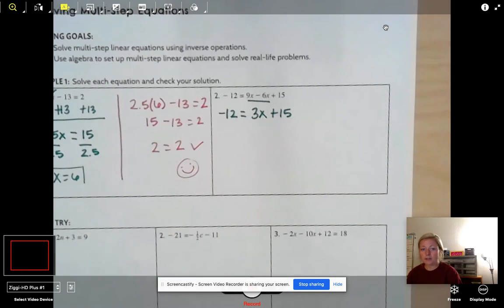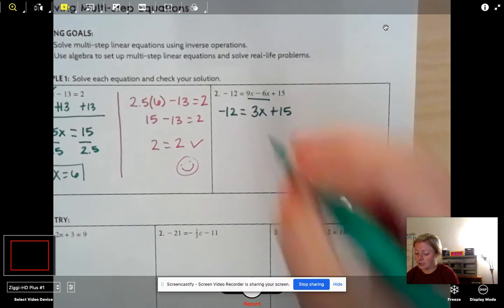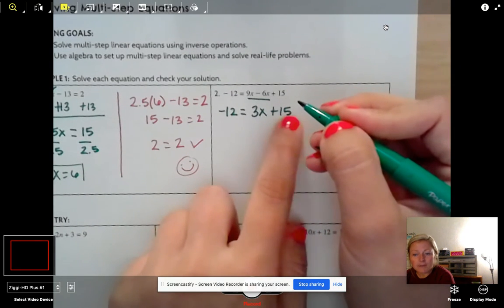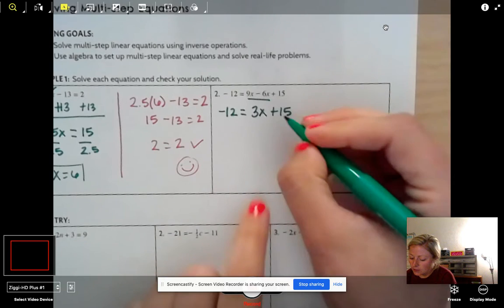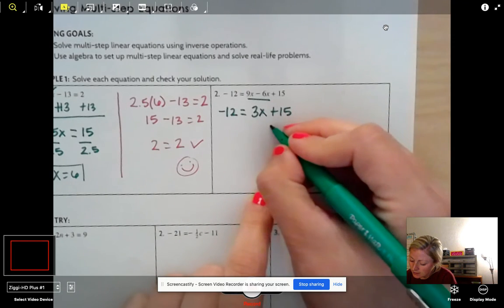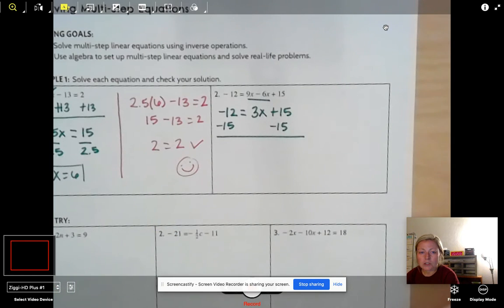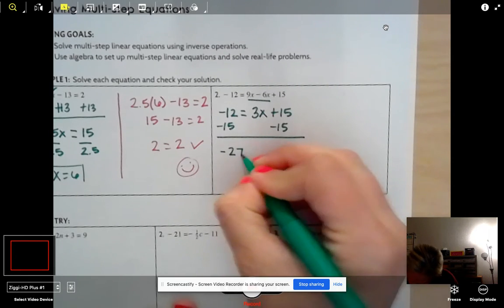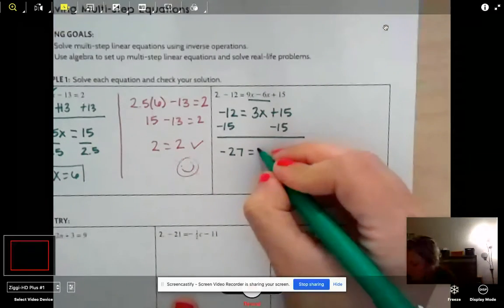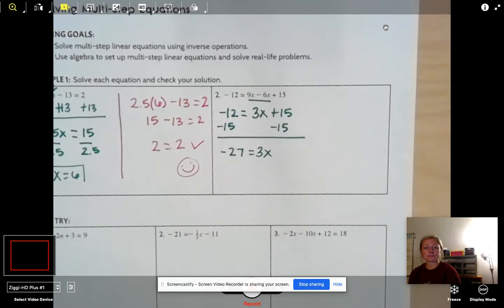And now you can drop down your 15. So we combined those two like terms. And now from here, we just get our variable alone. So I first have to get rid of that 15. So what's the opposite of adding 15? We subtract 15. We subtract 15. So negative 12 minus 15 more. So we're going more negative. And we get negative 27 equals 3x. And those cancel. And now again, folks, we just have that simple equation to solve.